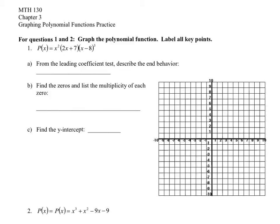In the first example, we want to graph the polynomial function. We can notice that it is not multiplied out — it's in factored form. So what might be helpful is to expand the expression out, where you have P of X equal to individual powers expanded out.